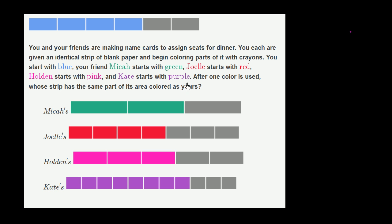whose strip has the same part of its area colored as yours? So let's look at my strip right over here. It has how many equal sections? Well, one, two, three, four, five, six equal sections.